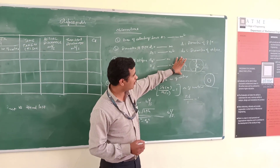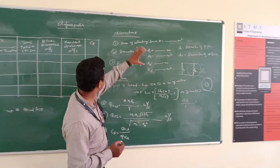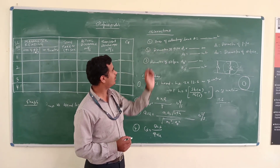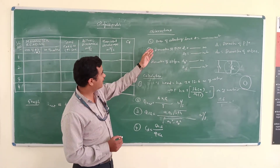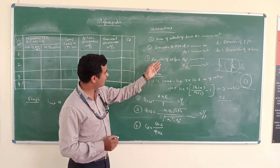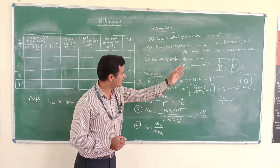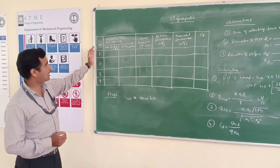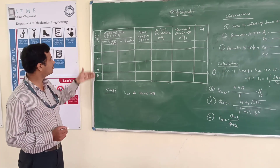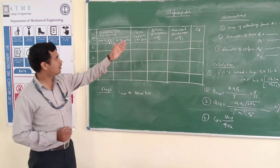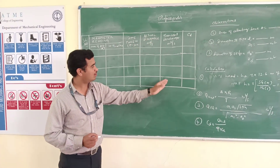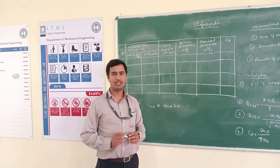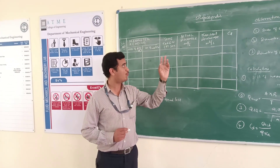After construction of this orifice meter, we can move on to the observation. In the observation, we will first take down the area of the collecting tank, the second one will be the diameter of the pipe, and the third one will be the diameter of the orifice meter in meters. After that observation, we move on to the tabular column. In the tabular column, we have a serial number, manometer reading, time taken, actual discharge, theoretical discharge, and the main aim of the experiment is to find out the coefficient of discharge of the orifice meter.